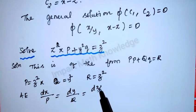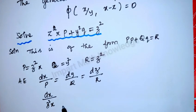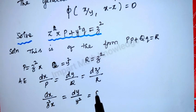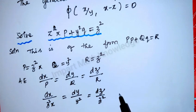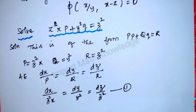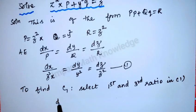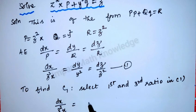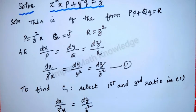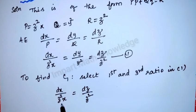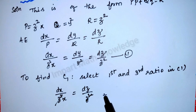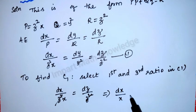The auxiliary equation is dx/P = dy/Q = dz/R, written as dx/(z²x) = dy/(y²) = dz/(z²a). Take this as equation number one. Grouping the first and third ratios: dx/(z²x) = dz/(z²a). Cancelling z² from both sides gives dx/x = dz/a.